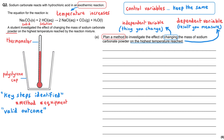You also need to make sure your experiment gives a valid outcome, which means describing what you'll change, what you'll measure, and what you'll keep the same — those control variables. Aim to include at least two control variables in your method. Your answer needs to be logically sequenced; you can write in bullet points, which makes it easier for the examiner to find which marks you should be awarded.